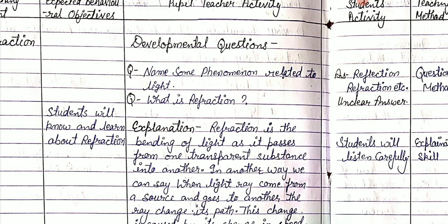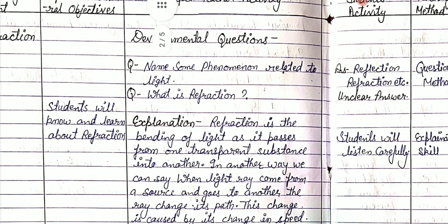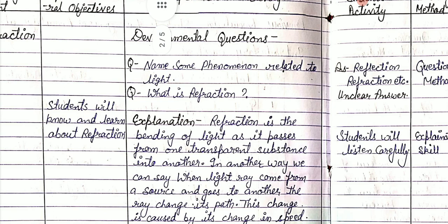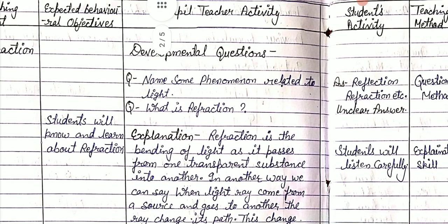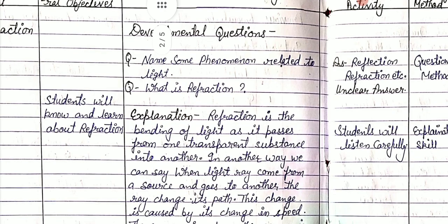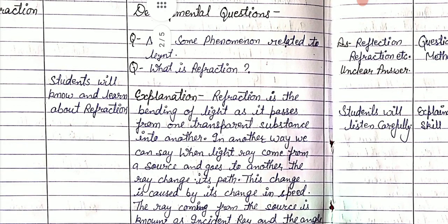First we note developmental questions. First question: names of phenomena related to light — answer: reflection, refraction. Second question: what is refraction? We found an unclear answer. In the behavioral change column we note: student will know and learn about refraction.